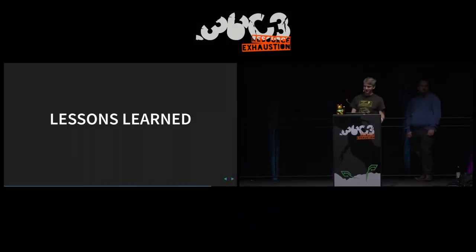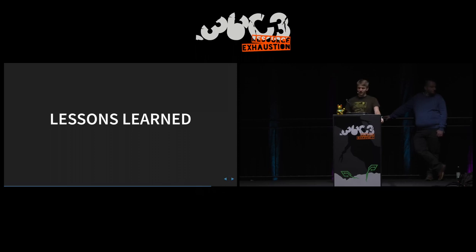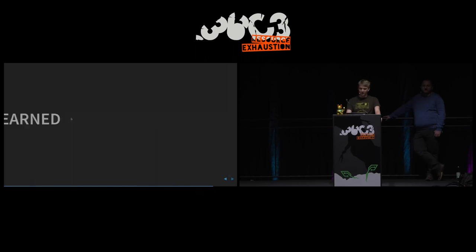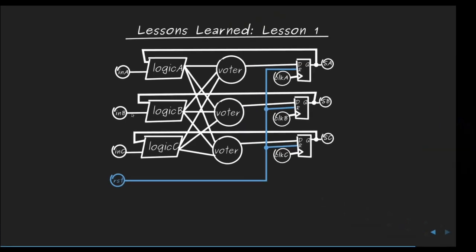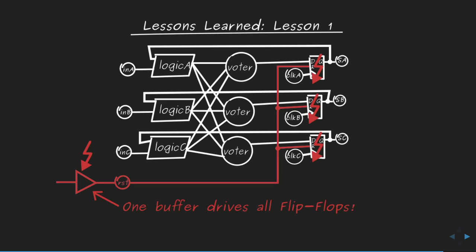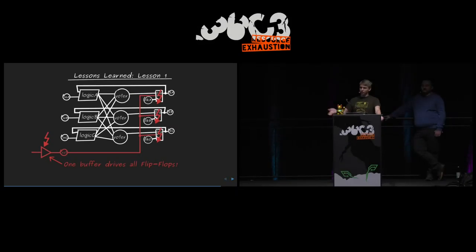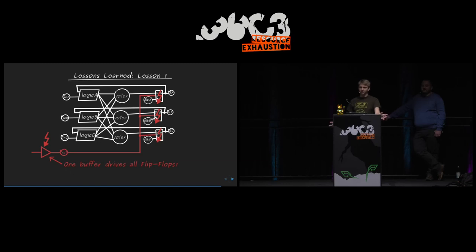To close out, it's always best to learn from mistakes, so two or three issues from their own circuits are presented as a guideline. The first involves a full TMR scheme where everything was triplicated — but a reset was added to initialize the system to a known state. What was overlooked was that a single buffer was driving the reset line; when that buffer experienced a transient event, all registers were cleared simultaneously, invalidating all the protection.